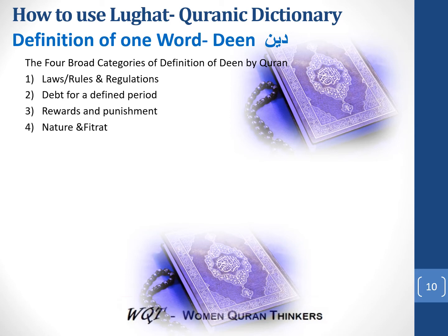Fitrat is basically that particular set of characteristics given to any creation at the time of creation by God, in its most pure form. For instance, it is in the fitrat of the goat to eat grass — it will never eat meat. Similarly, it is in the fitrat of the lion to eat meat — it will never eat grass. These are the characteristics embedded in the creation at the time of creation by our creator, in their most pure form.